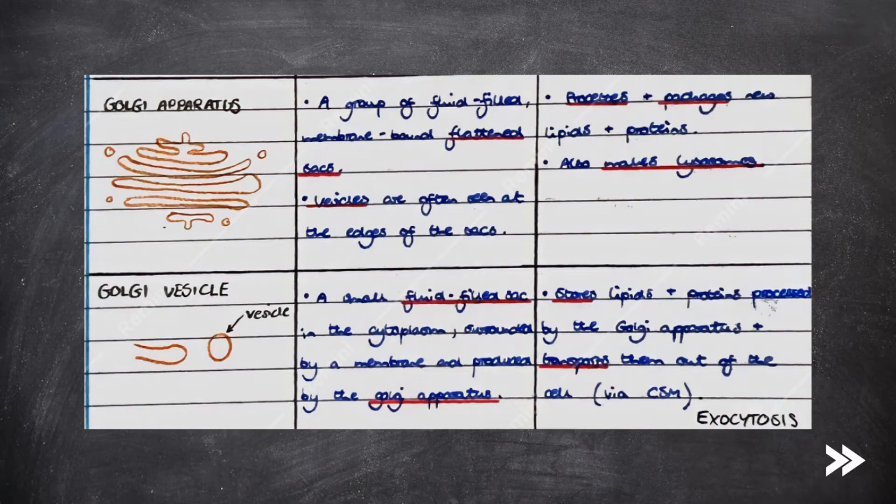Then we have Golgi vesicles. A Golgi vesicle is a small, fluid-filled sac in the cytoplasm, surrounded by a membrane, and is produced by the Golgi apparatus. Golgi vesicles store lipids and proteins produced by the Golgi apparatus and transport them out of the cell via the cell surface membrane. This is known as exocytosis.